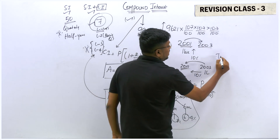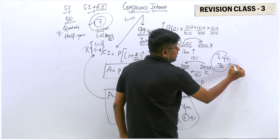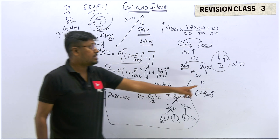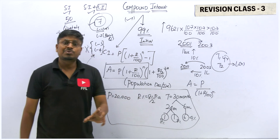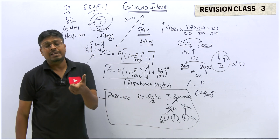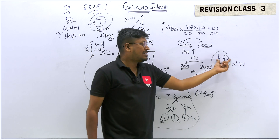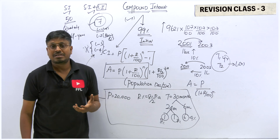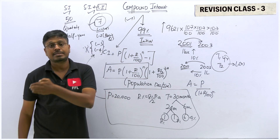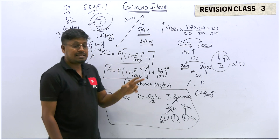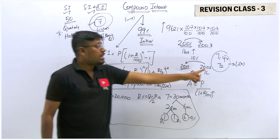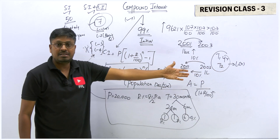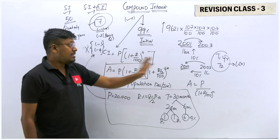There is also a concept called T1 year and T2 year, which I covered in lesson seven. In this concept, you are given data for two different years and you frame one equation for each year. Then you divide both equations to find the principal or the required value. This is one of the easiest question types. If you find this kind of question in the prelims exam, you can attempt it first because it just requires framing and dividing two equations.